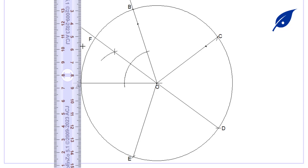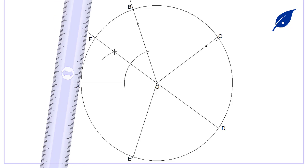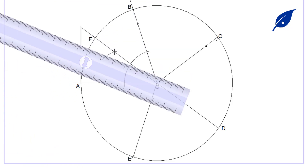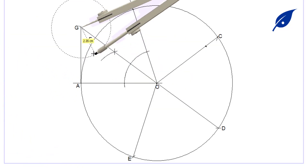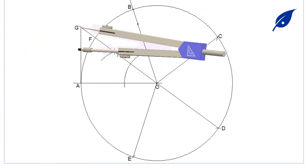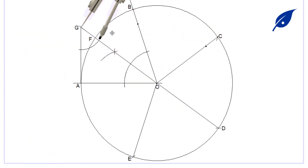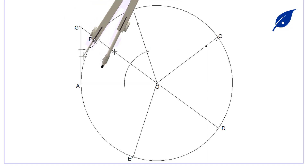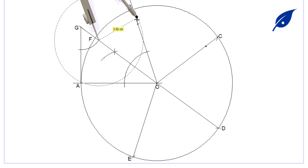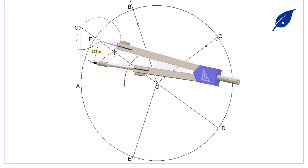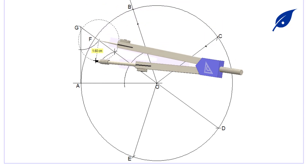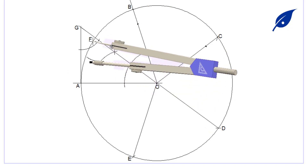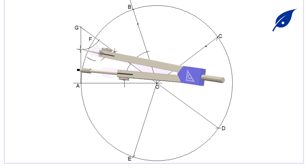We mark the point F on the circumference. At A, we draw a perpendicular line from A to meet the line FO at G. At G, we bisect the angle AGO and extend the line.